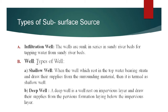The second type of subsurface source is well. There are two types of well: shallow well and deep well. A shallow well rests in the top water-bearing strata and draws its supplies from the surrounding material. This type of well depends upon the depth of wall. The diameter of the shallow well usually varies from 1 meter to 10 meter and the depth is not very deep. A deep well rests on an impervious layer and draws supplies from the pervious formation lying below the impervious layer.